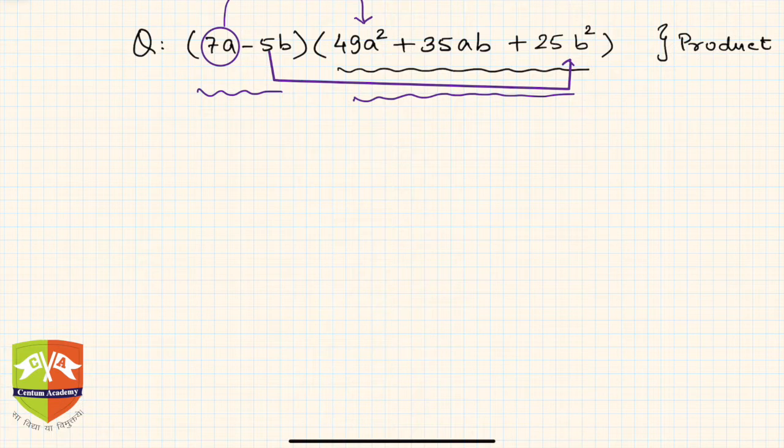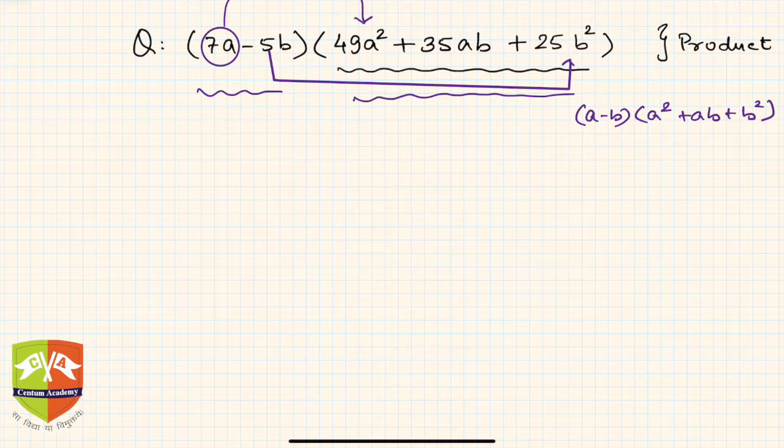If you check that list you will see that there is an identity which says (a-b) times (a²+ab+b²) equals a³-b³. Right, so we are going to use this identity here.